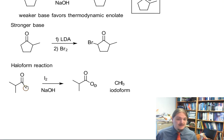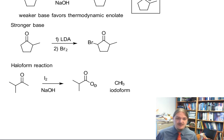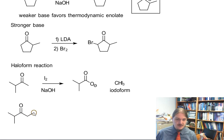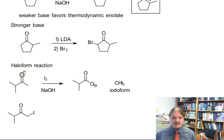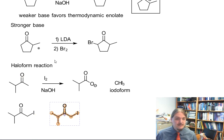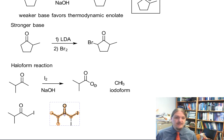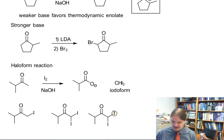When you have a methyl ketone — so there's a methyl group on one side of the ketone — even if other places look more acidic, you're eventually going to get substitution there. And now that position is more acidic, so we're going to get another halogen, and then another one. I'm going to abbreviate this as CI3.